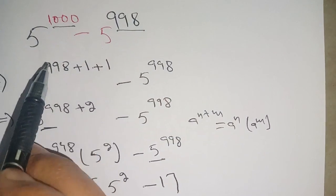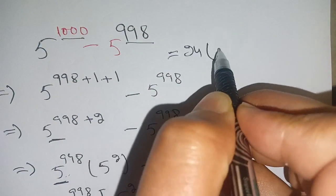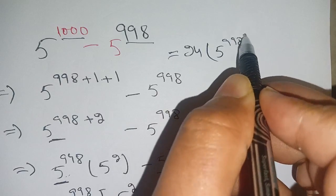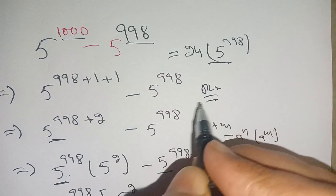5 power 1000 minus 5 power 998 is equal to 24 times 5 power 998. If you are new here, please subscribe to the channel for more informative videos. See you in the next video. Till then, bye.